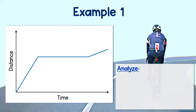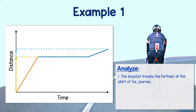Just tell a story. Just by looking at this graph, I can tell that this bicyclist traveled the furthest at the start of his journey. After all, if we compare the first line to the axes for distance, we see that it goes the majority of the distance, whereas the rest of the graph takes him only a fraction of the way.